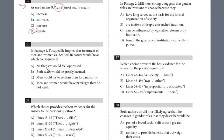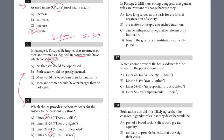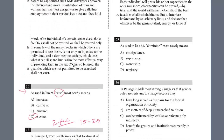Let's take a look at question 33. Whenever we're doing these questions, scan down at the rest. The next one — question 34 — is a two-part question, so we are looking for evidence. We know the evidence is bound in a pretty short range between lines 15 and 29. Tocqueville implies that treatment of men and women as identical in nature would have what consequence? We kind of read this already — you can almost predict the answer.